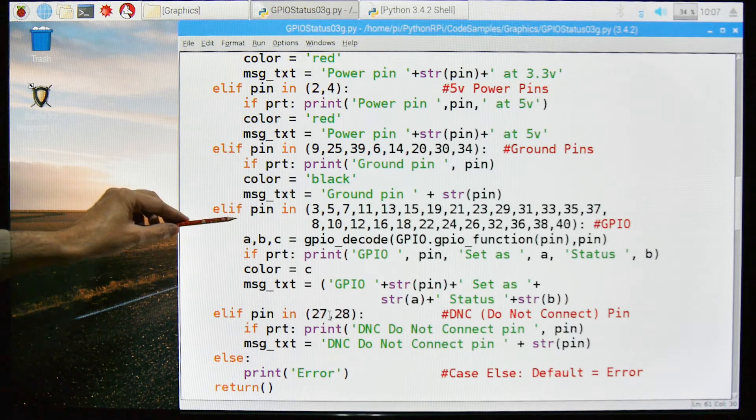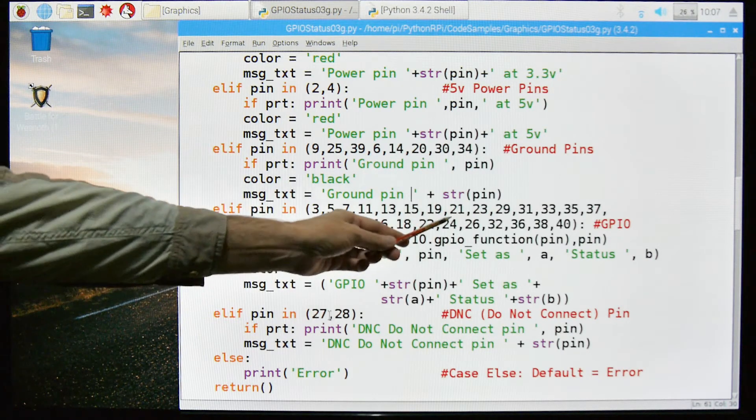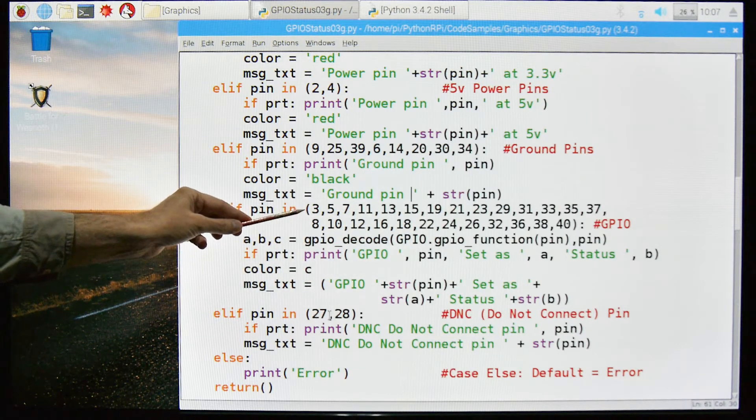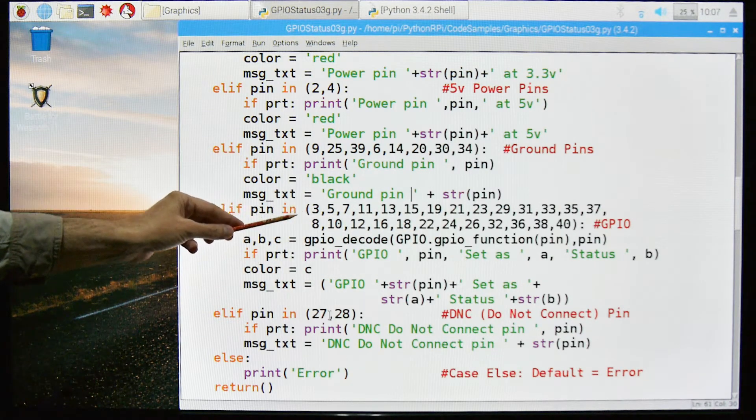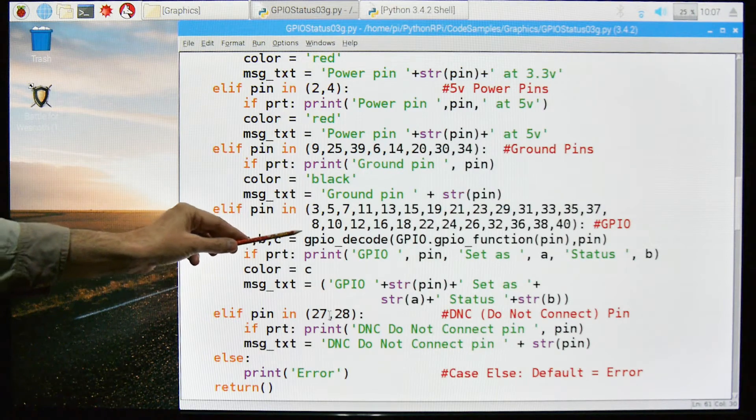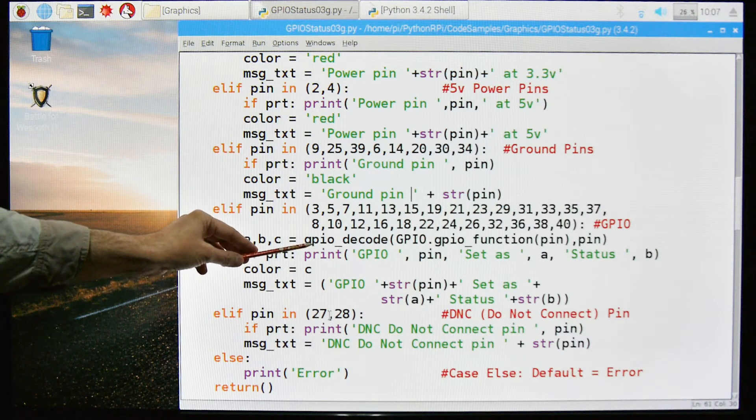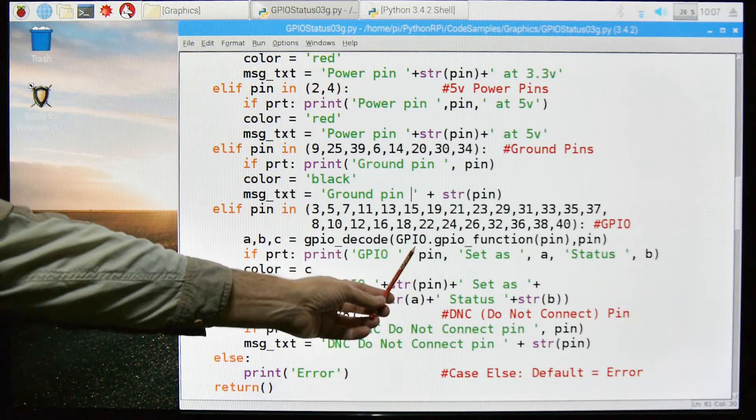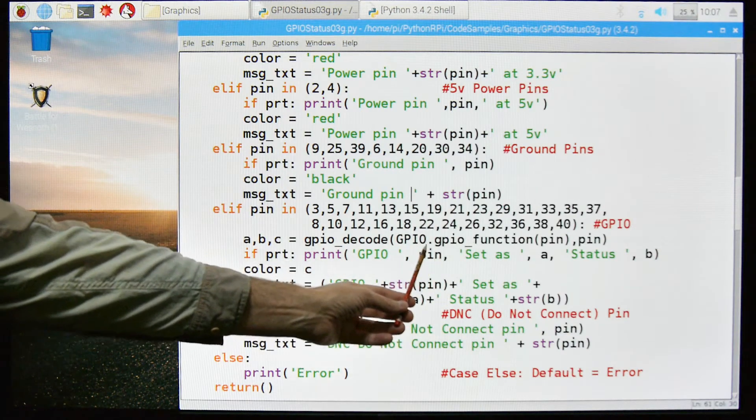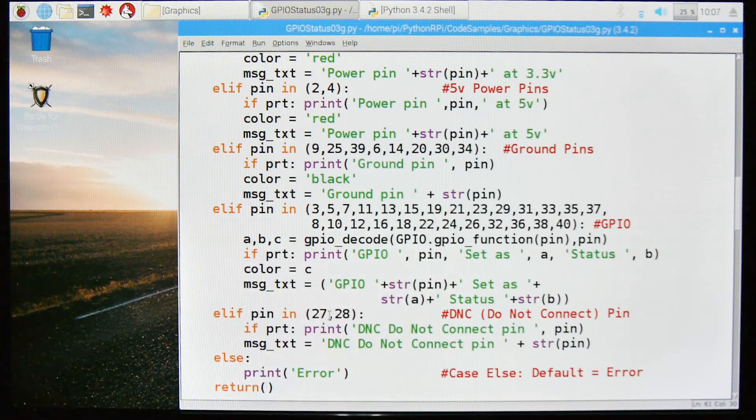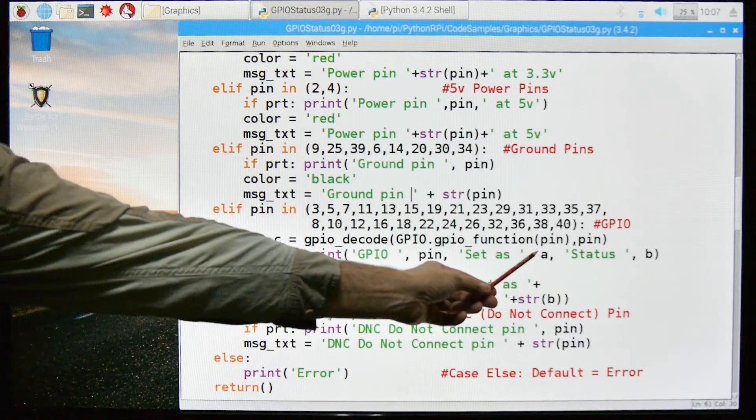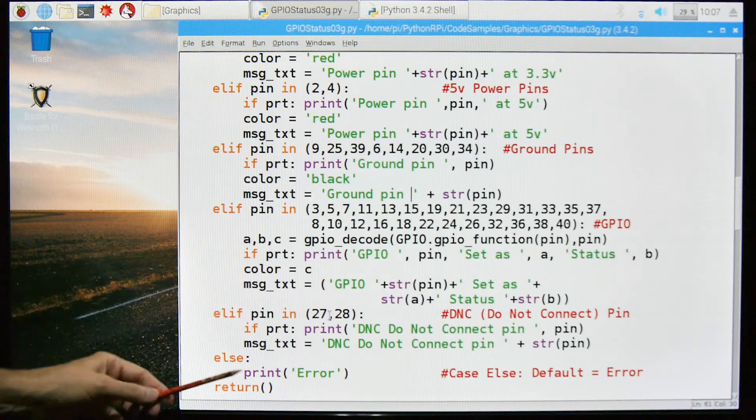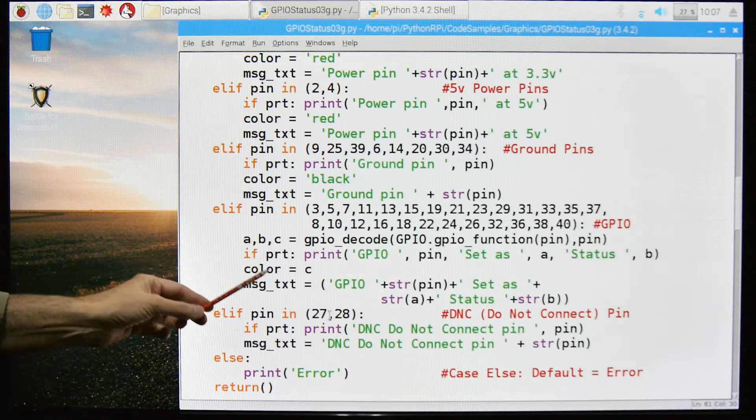Next, otherwise, if the PIN is in this range, these are GPIO PINs. They can either be set to input, output, or other things. So we're going to send it to our GPIO decode program that we looked at earlier. We're going to call this function, which is going to tell us what it was set as. So is it set as input, output, whatever, based on the PIN and then the PIN number, and we're going to get back three variables.